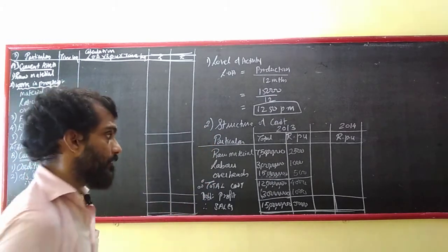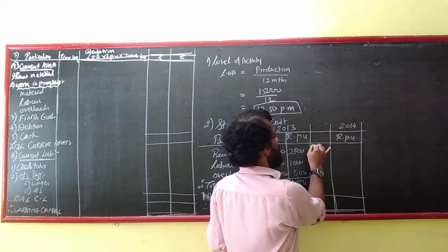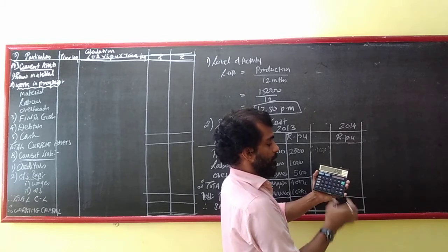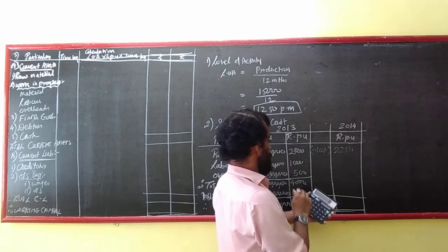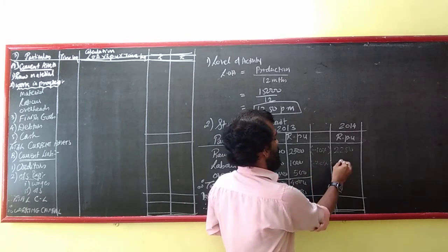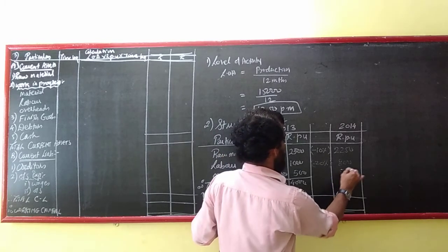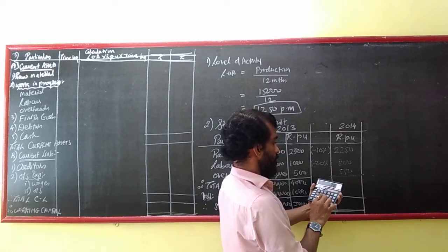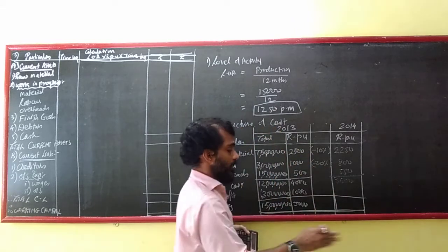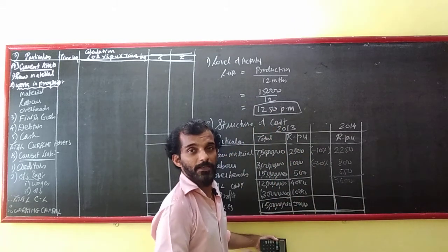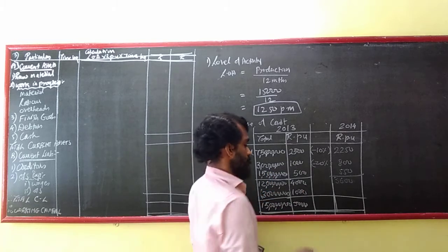Now for 2014: material per unit will reduce by 10% — so 2,500 minus 10% = 2,250. Labor will reduce by 20% — so 1,000 minus 20% = 800. Overhead will increase by 10%. Selling price is to maintain profit at 20% on sales, which is equivalent to 25% on cost.